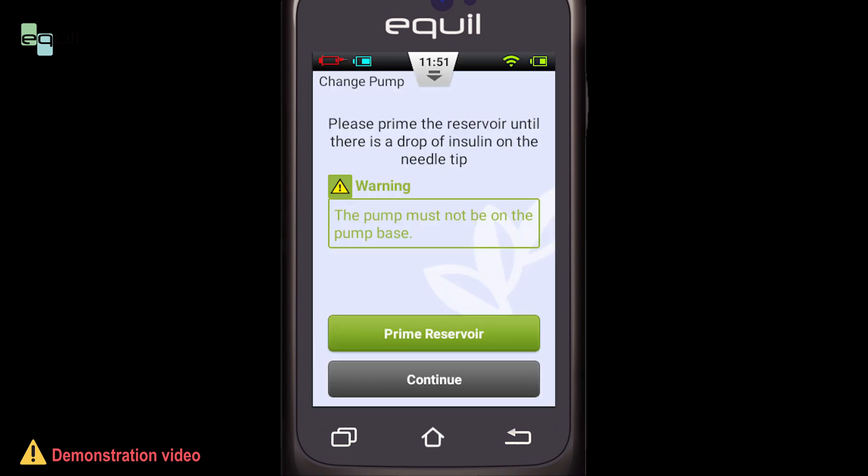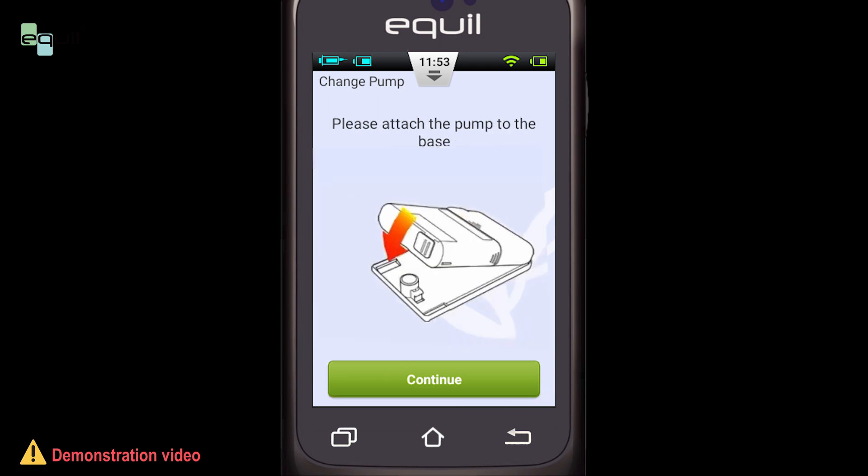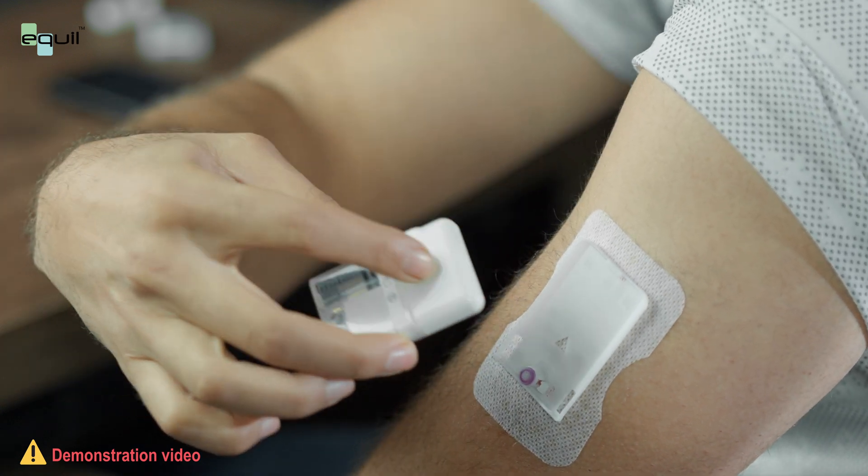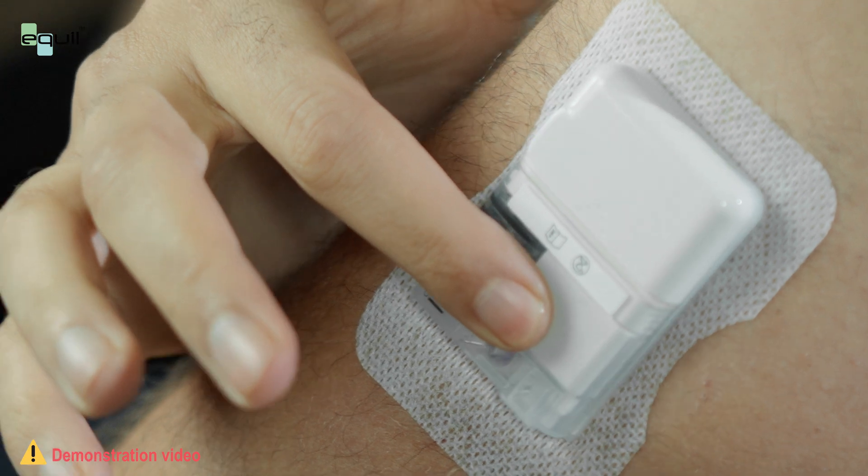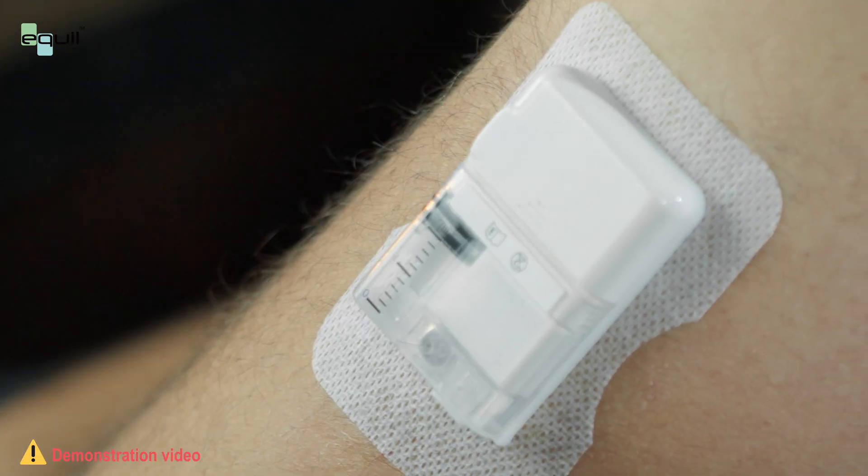Here, Continue button will turn from gray to green. Select Continue. Now attach the pump to the pump base. Fix it in the right orientation and push it from backside until you hear a tick.